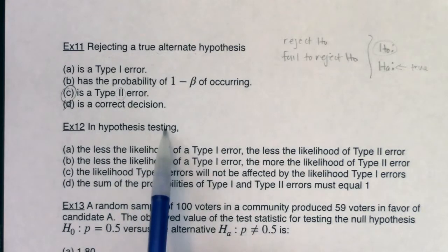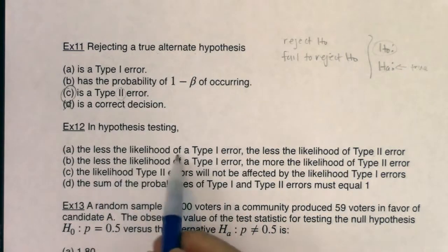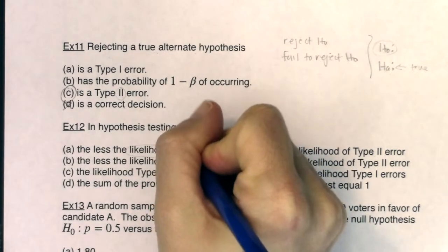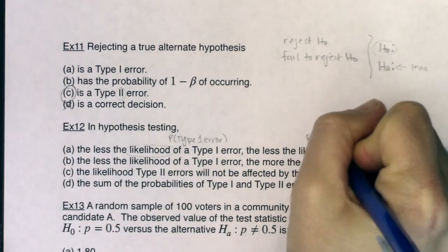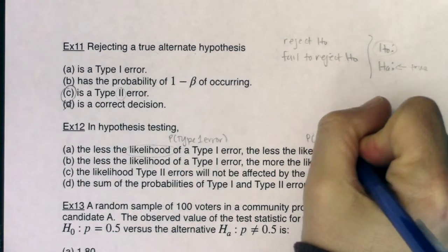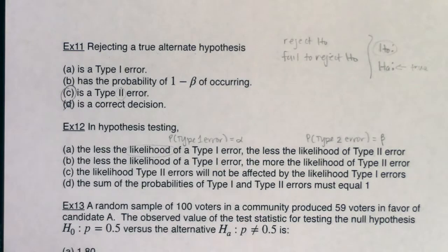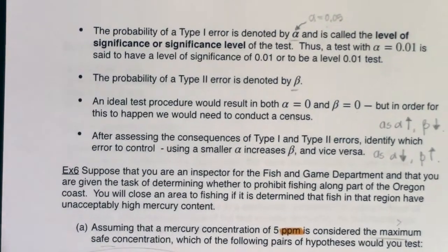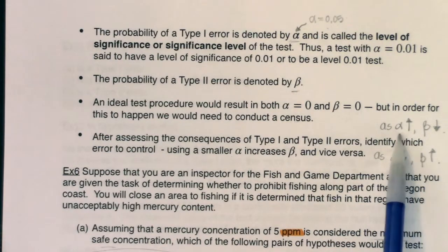In example 12, it says: in hypothesis testing, the less the likelihood of a type 1 error, the less the likelihood of a type 2 error. When it says 'less the likelihood,' we're talking about probability. The probability of a type 1 error always gets the symbol alpha, and the probability of a type 2 error always gets the symbol beta. We talked back in example 6 about the relationship between these two: using a smaller alpha increases beta, and vice versa. If you have a larger alpha, you'll have a smaller beta, and if you have a smaller alpha, you'll have a larger beta.